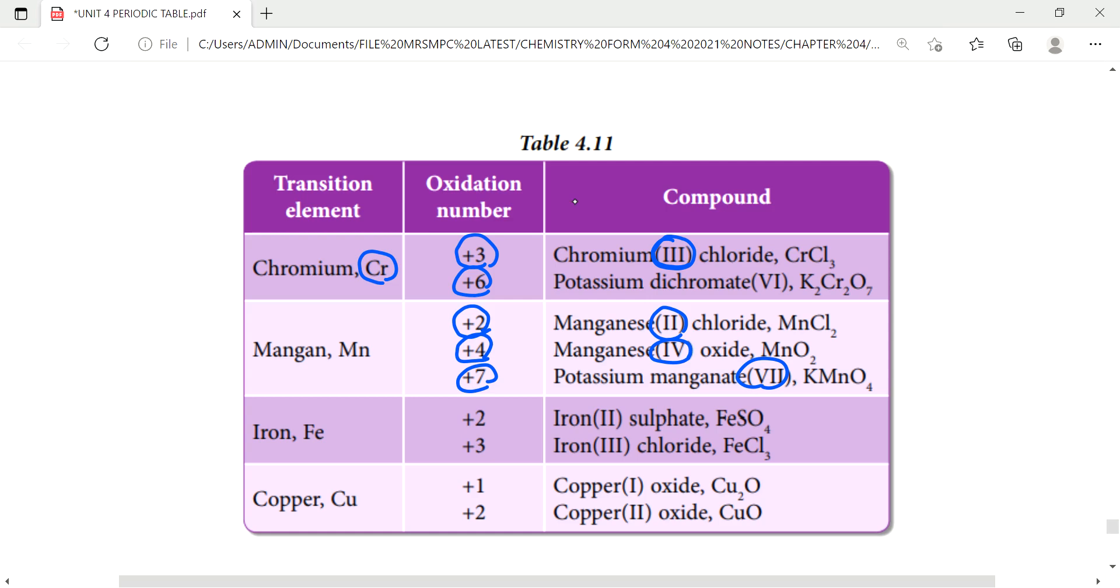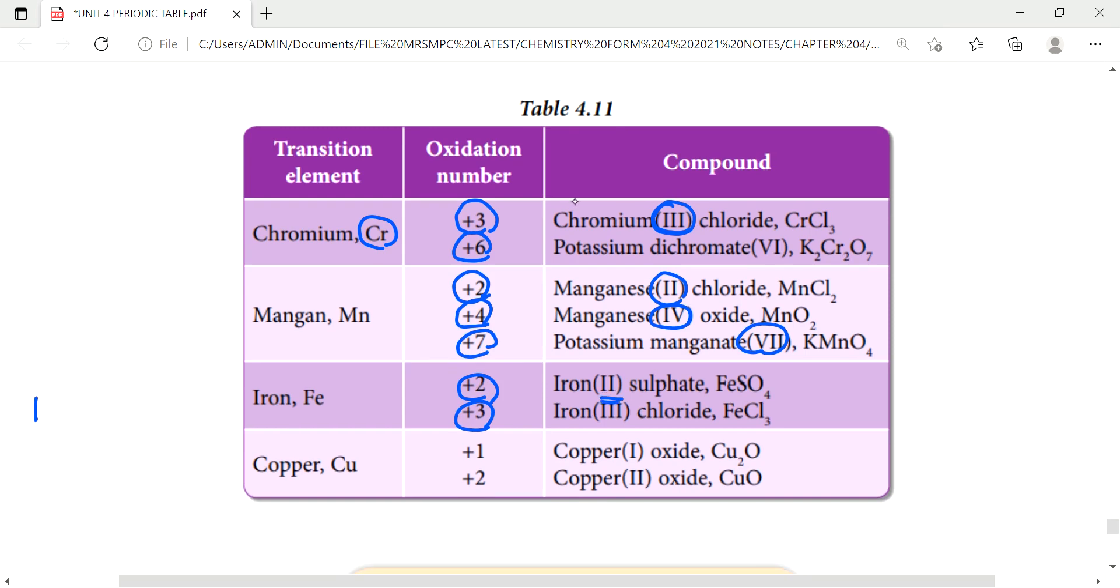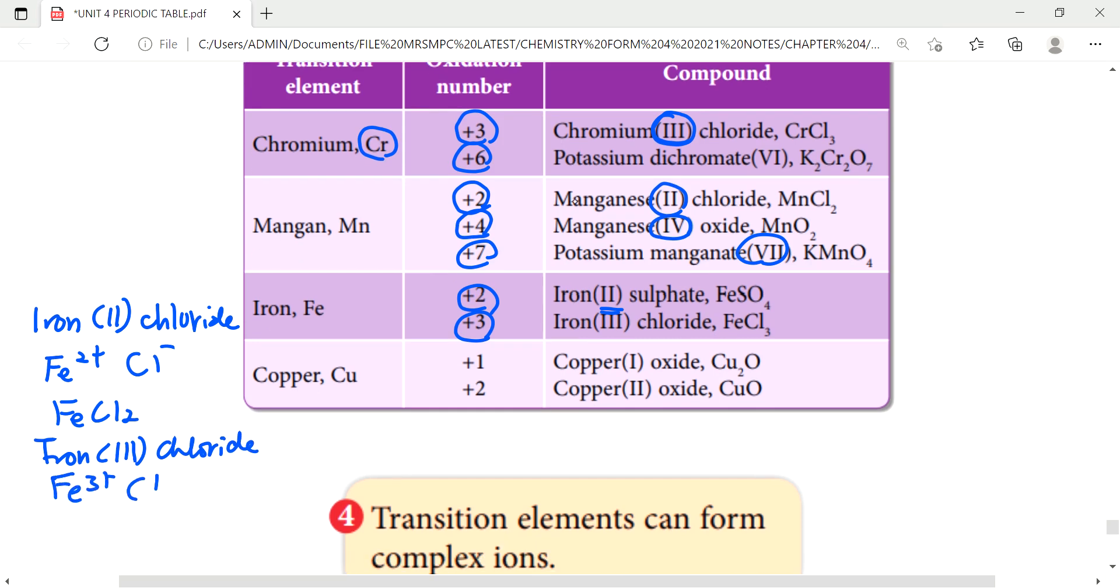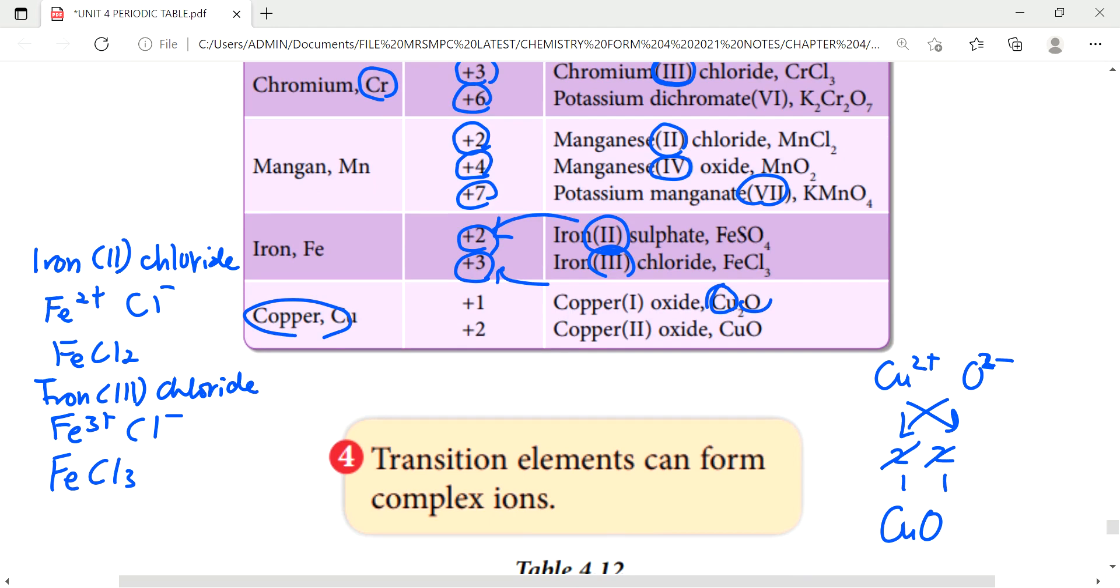For example iron. Iron also has more than one, plus 2 and plus 3. So look here, iron 2 plus. When we have different charge, it will have different chemical formula. For example, iron II chloride. The chemical formula since it's Fe2+ with Cl-, it will become FeCl2. If iron III chloride, it's between Fe3+ with Cl-, it will become FeCl3, different chemical formula. So that's why you have to take note. Roman 2 means it has charge plus 2, roman 3 means plus 3. Same with copper plus 1 and plus 2. So copper I oxide Cu2O. Copper II oxide is CuO because Cu2+ with O2-, we cross-cross get two-two and then we simplify it. So we get CuO.